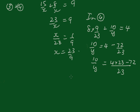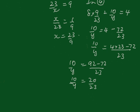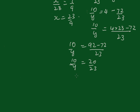10 on y equals 20 on 23. Dividing both sides by 10, 1 on y equals 2 on 23, so y equals 23 on 2, as we had before.